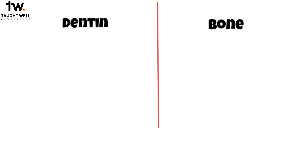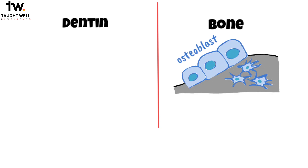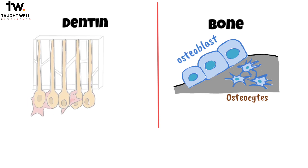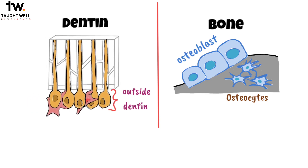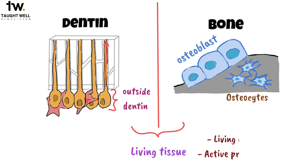Dentin and bone are both hard and have a lot in common, but there are some important differences. In bone, some cells known as osteoblasts stay on the surface of the bone. When these cells get stuck in the bone material they make, we call them osteocytes. But with dentin, it's different — the main part of the odontoblast stays outside of the dentin. Instead, they stretch long parts of themselves into the dentin tubes, keeping their connection to the main part of the cell. Even though they're different, both dentin and bone are considered living tissues because they have living cells and active processes.